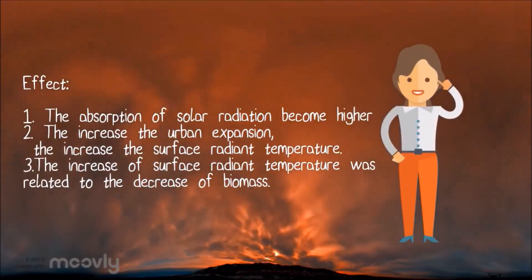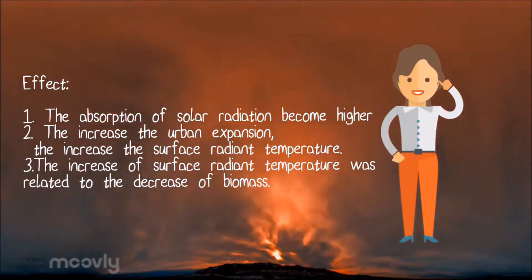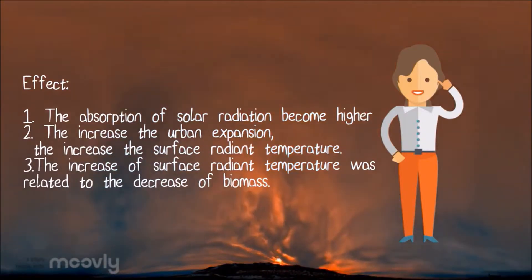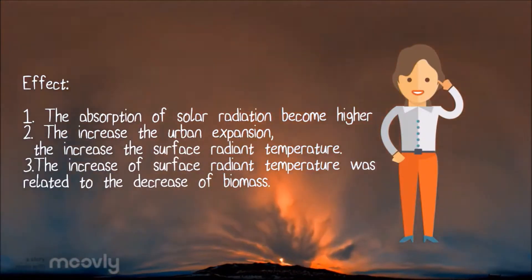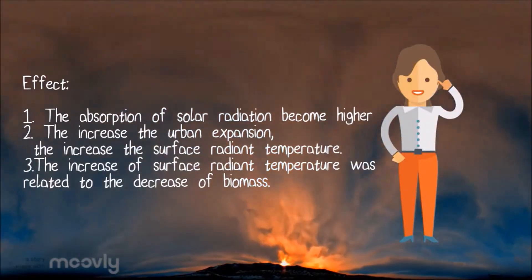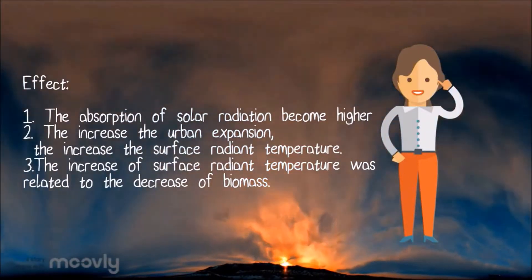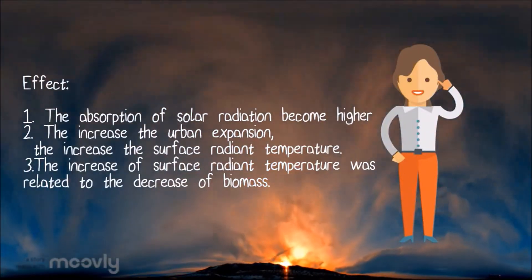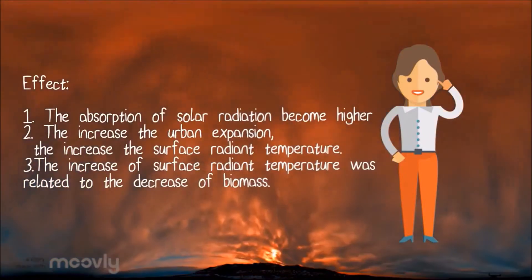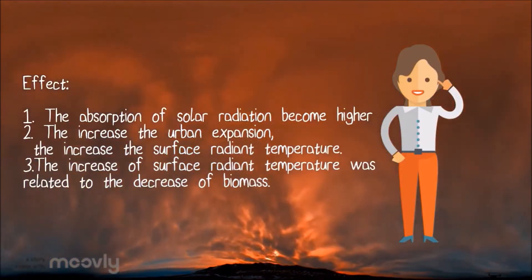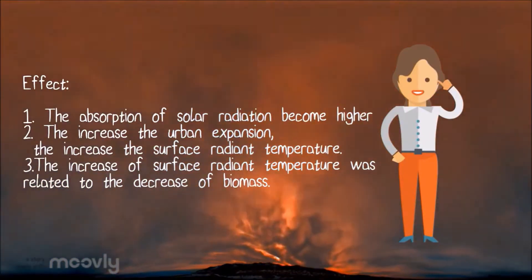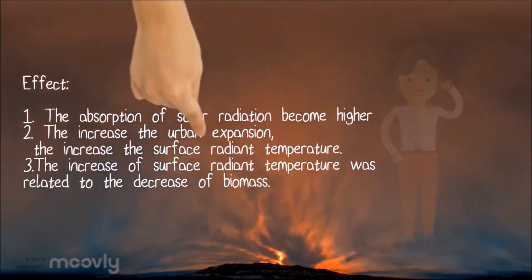Urban expansion can give some effects. First, the absorption of solar radiation becomes increased. Second, the increase of urban expansion will increase the surface radiant temperature. Next, the increase of surface radiant temperature is related to the decrease of biomass.